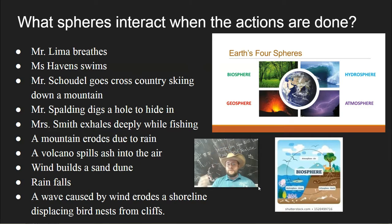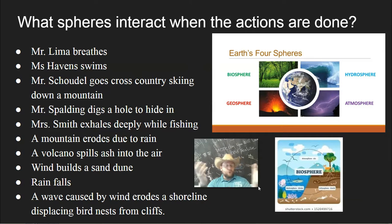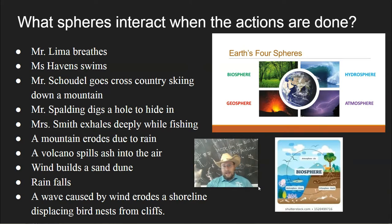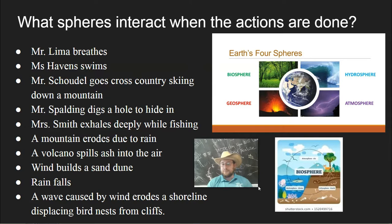Mr. Smith exhales deeply while fishing: she's alive — biosphere — she's exhaling, so that's air interacting with the atmosphere, and she needs to fish in the water, so there's hydrosphere as well. A mountain eroded due to rain — that's geosphere and rain, which is hydrosphere, but also the atmosphere causing weather. A volcano spills ash into the air — that's the geosphere volcano spilling ash into the atmosphere. Wind builds a sand dune — that's the atmosphere, the wind, creating a sand dune in the geosphere. Rain falling involves the hydrosphere and the atmosphere. A wave caused by wind erodes the shoreline displacing a bird nest from a cliff — all four spheres are clearly there: the bird that's alive, the cliff being eroded as part of the geosphere, the wind as part of the weather, and the shoreline and waves as part of the hydrosphere.